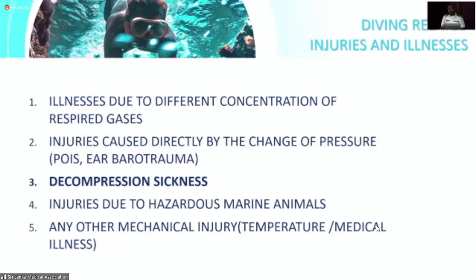The second category of injury is caused directly by the change of pressure — barotrauma. Every 10 meters of depth, pressure doubles: at the surface it's 1 ATA, at 10 meters it's 2 ATA, at 20 meters it's 3 ATA. For example, lung capacity of 6 liters at the surface becomes 3 liters at 10 meters. This change of pressure can affect hollow organs — lungs, sinuses, and middle ear.